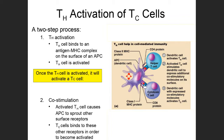When cytotoxic T cells find cells displaying that antigen, they destroy them through lysis — a process where they puncture the cell membrane, causing all of the internal contents of the cell to spill out, which destroys the cell.